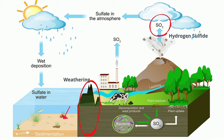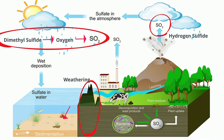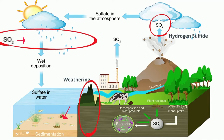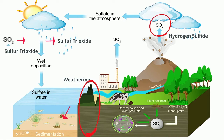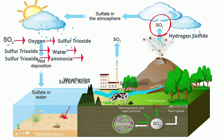Marine algae produce dimethyl sulfide that enters the atmosphere as tiny droplets. Sulfur dioxide gas also forms when dimethyl sulfide reacts with oxygen gas. The burning of fossil fuels also releases sulfur dioxide into the atmosphere. Sulfur dioxide reacts with oxygen in the atmosphere to create sulfur trioxide, which then reacts with water in the atmosphere to produce sulfuric acid. Sulfur trioxide also reacts with ammonia to produce sulfate salts. The sulfuric acid and sulfate salts fall to the Earth by precipitation like rainfall.